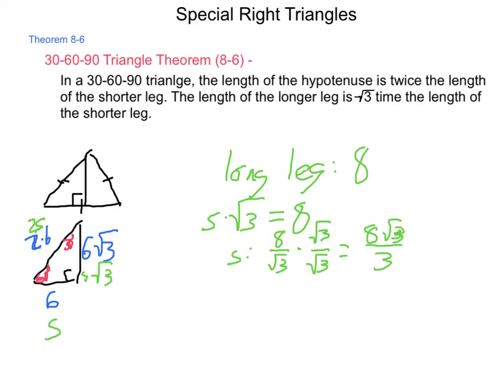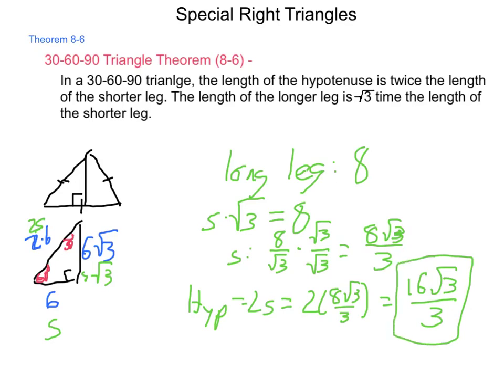Finding the hypotenuse, it's just 2 times this. The hypotenuse is 2S, which becomes 2 × (8√3/3) = 16√3/3. So the hypotenuse is 16√3/3, the short side is 8√3/3, and the long leg is 8.